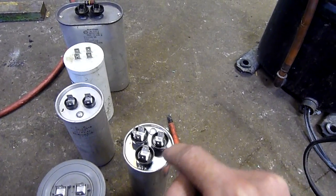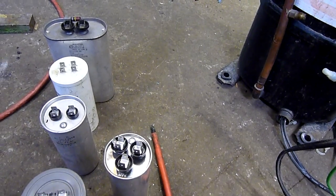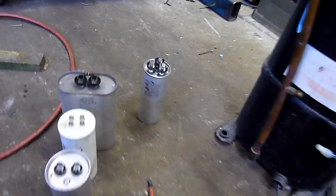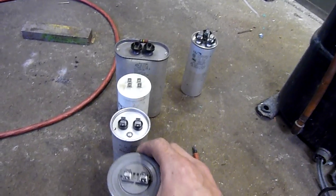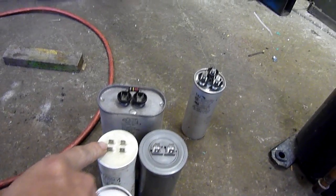This one has herm, fan, and common. You go common to herm for the hermetic compressor and common to fan for the fan. I think I've already done a video on multi caps. Internally these two are the same - these two terminals are bridged between each other.